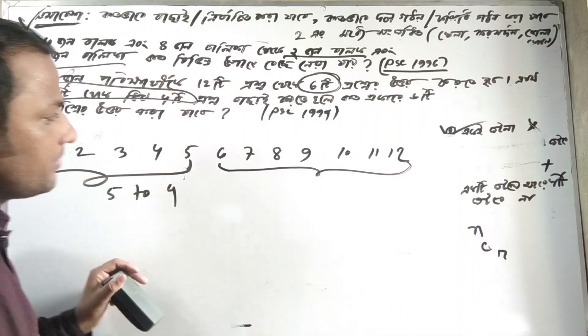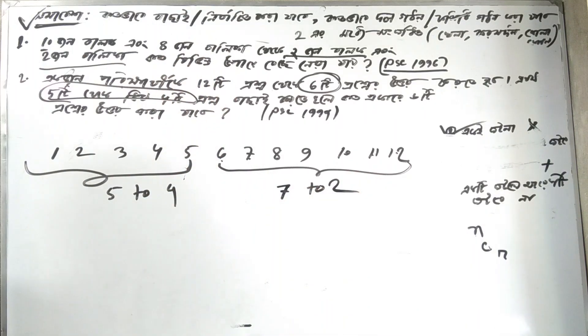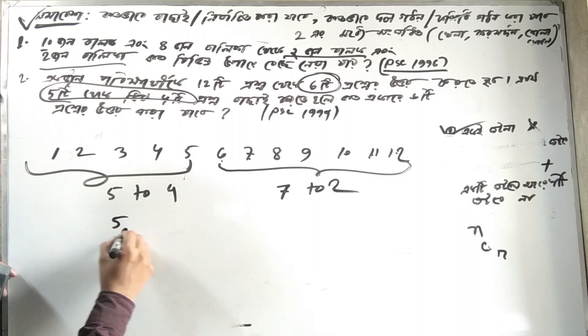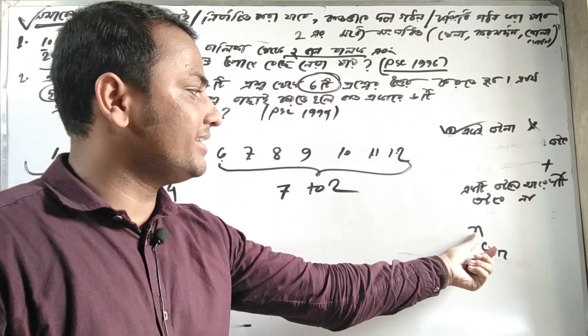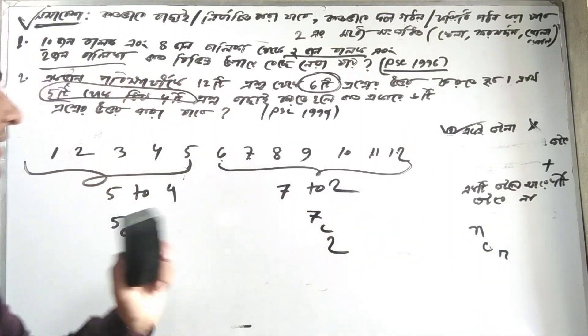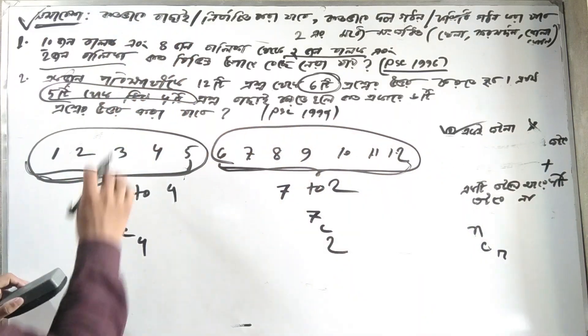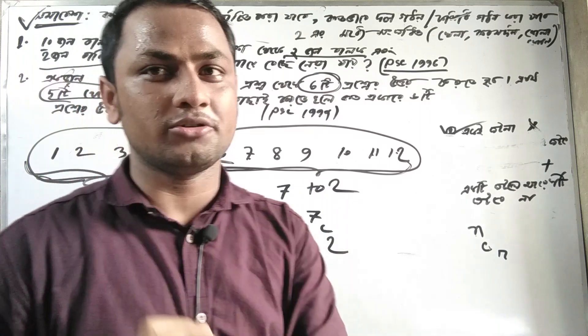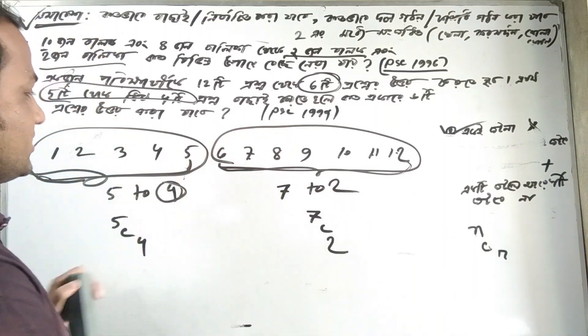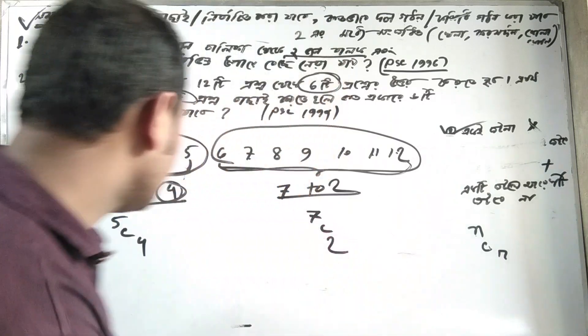To solve quickly, focus on the specific question being asked. If they want you to select a certain number of people and provide the total, calculate directly. Don't waste time on extra details. Use shortcuts where possible - if you can identify the pattern, you can solve it faster with the right formula.